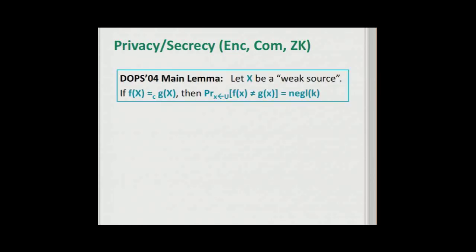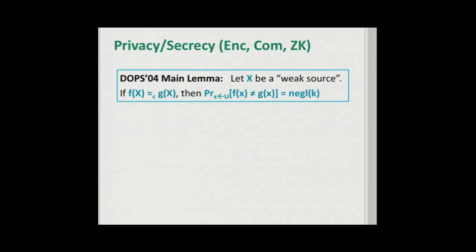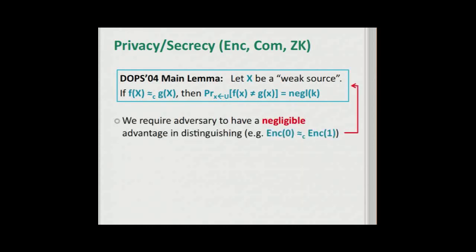Let me go into the main lemma that allowed Dodis et al. to show this very negative result for encryption, commitments, and pretty much any privacy application. The lemma is as follows: if we consider a weak source X and two functions f and g such that f(X) and g(X) are computationally indistinguishable, then it must be the case that f and g actually agree on all but a negligible number of inputs.